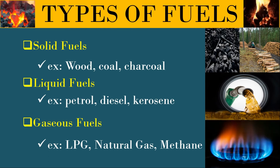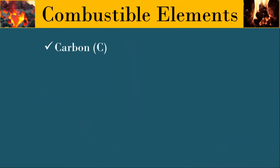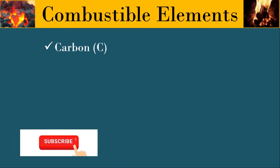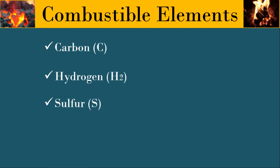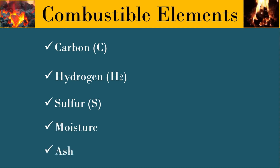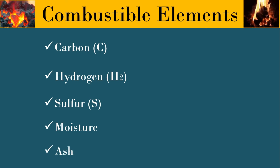Now we will discuss the chemical composition of these fuels. Carbon occupies the major proportion in the chemical composition. Hydrogen and sulfur are the other elements. These three chemical elements — carbon, hydrogen, and sulfur — only will participate in combustion. Other than these three, fuel contains moisture and ash. Remember, moisture and ash will not take part in combustion, but they will absorb heat liberated during combustion. That is why lower moisture and lower ash content fuels have higher calorific value.